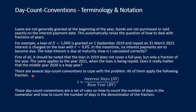There are several day count conventions to cope with this problem. All of them apply the following fraction: T equals a fraction where the numerator is the interest days — the number of days on which interest is paid — divided by the length of the so-called base year, which may be 360, 365, or 366. Day count conventions are a set of rules on how to count the number of days in the numerator and in the denominator of this fraction.